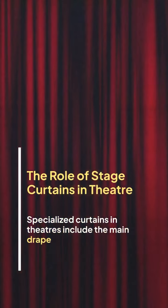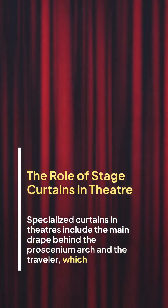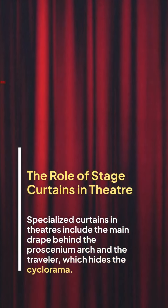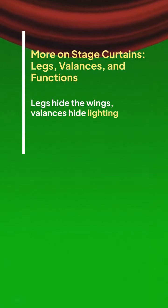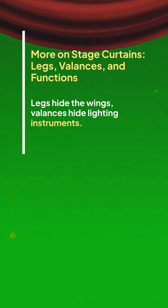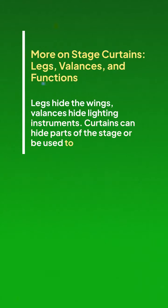Specialized curtains in theaters include the main drape behind the proscenium arch and the traveler, which hides the cyclorama. Legs hide the wings. Valances hide lighting instruments. Curtains can hide parts of the stage or be used to create effects.